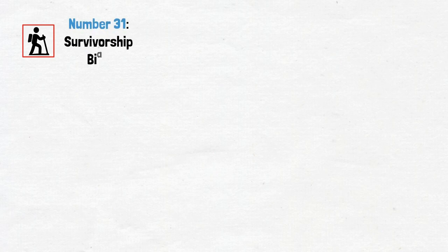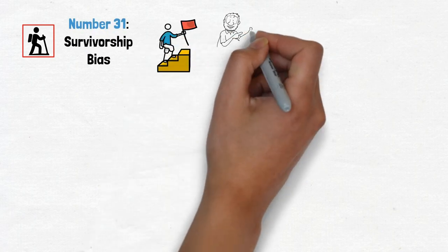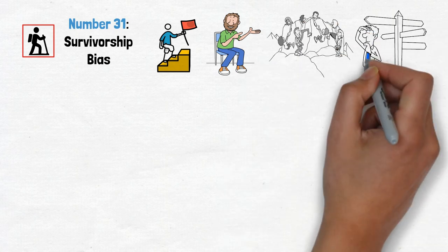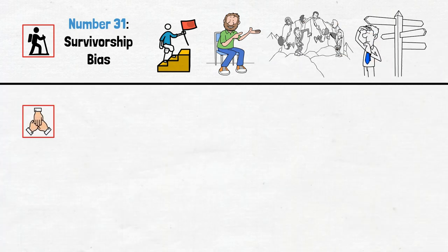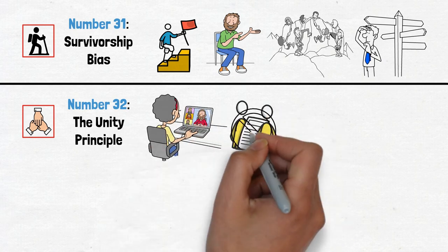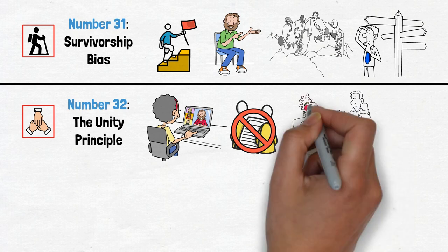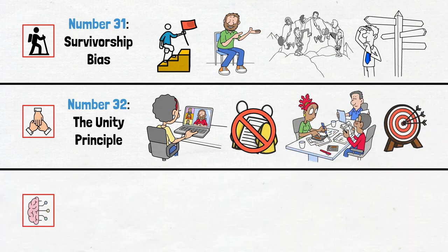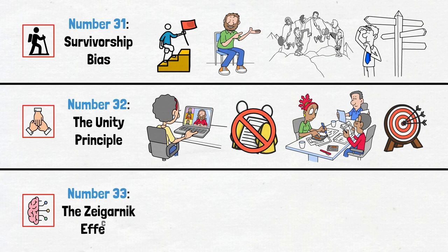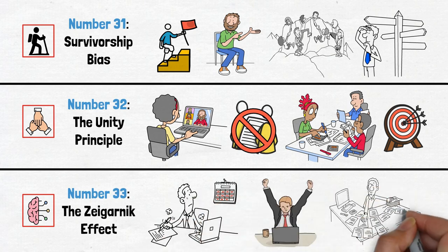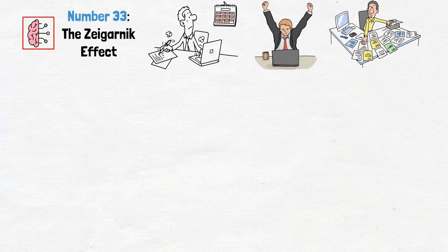Number 31, survivorship bias. Success stories aren't the whole picture. Remember the struggles and failures that pave the road to success. Number 32, the unity principle. Trust information based on its merit, not the messenger. Stay objective and make informed decisions. Number 33, the Zeigarnik effect. Harness the power of unfinished tasks. Plan ahead and set yourself up for success.